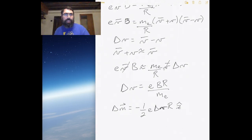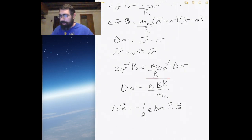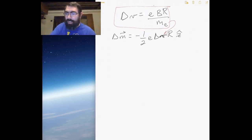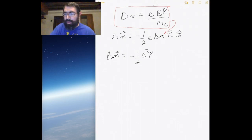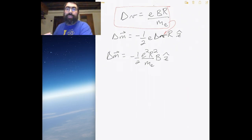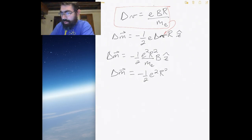The change in the magnetic moment is Δμ = −(1/2)e·Δv·R in the z-direction, replacing v with Δv in our earlier expression. Substituting in for Δv, we get a change in the magnetic moment of Δμ = −(e²R²/2mₑ) · B. Since the magnetic field is in the z-direction, we write this as Δμ_z = −(e²R²/2mₑ) · B.